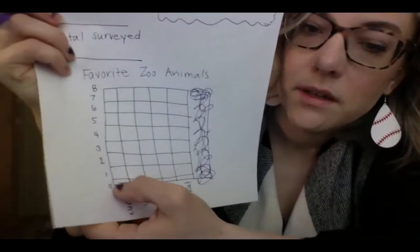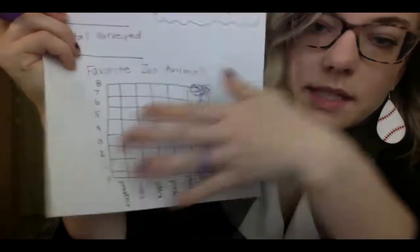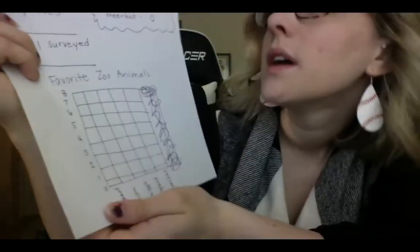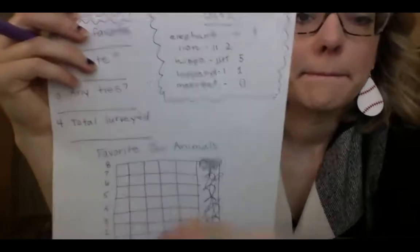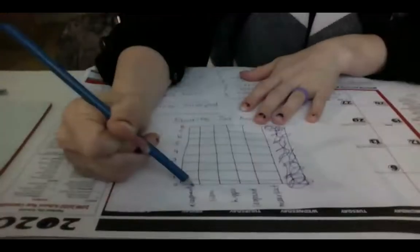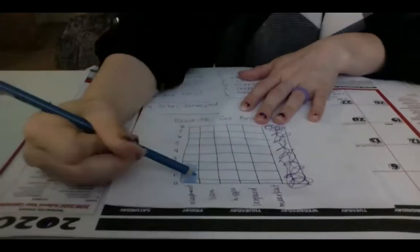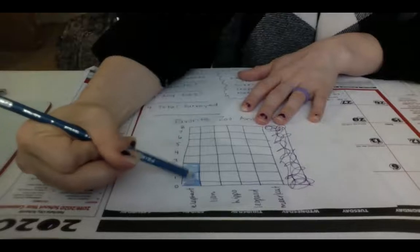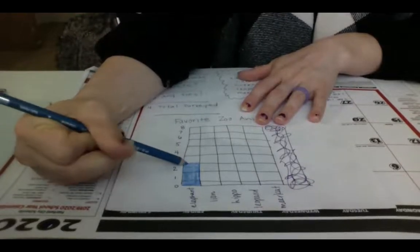We have zero down here, which means nothing is colored in, then one, two, three, four, five, six, seven, and eight at the top. Elephant was our first option — elephant got three votes. I'm going to choose a blue color for elephant and color in one, two, three bars. This shows me that elephant got three votes.